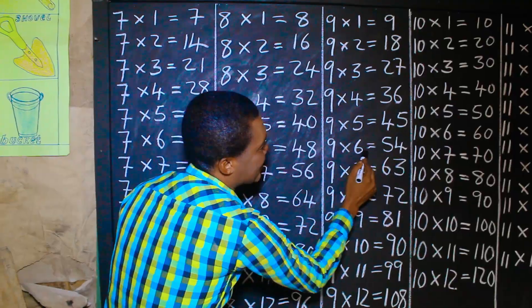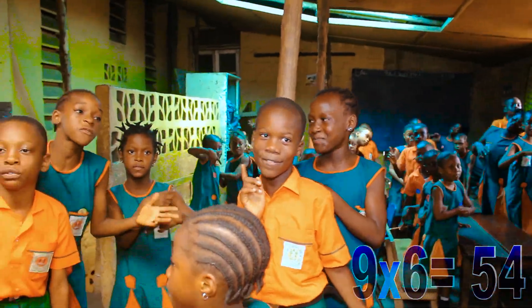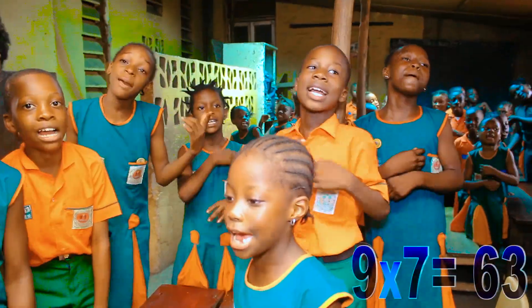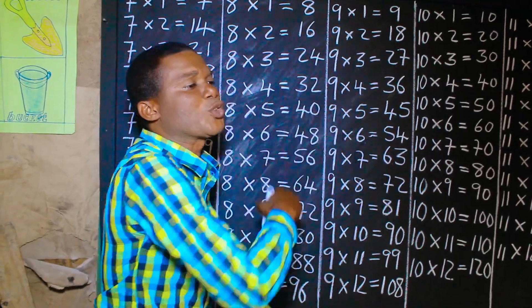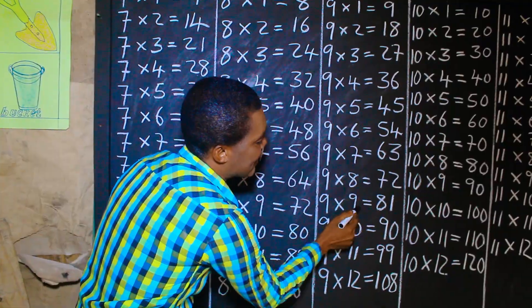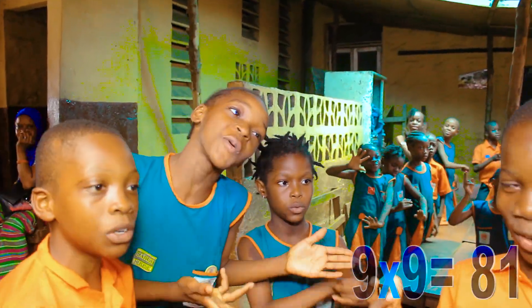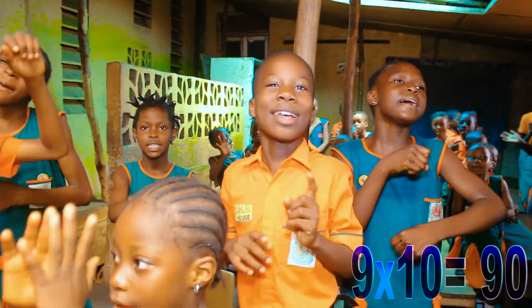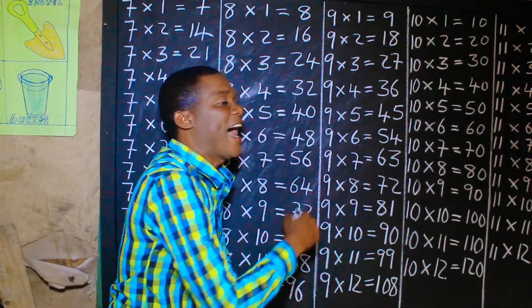9 times 6 is 54. 9 times 7 is 63. 9 times 8 is 72. 9 times 9 is 81. 9 times 10 is 90. 9 times 11 is 99.